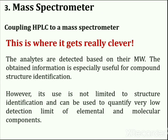The third detection method involves coupling the HPLC system to a mass spectrometer. When the detector is showing a peak, some of what is passing through can be diverted to a mass spectrometer, where it will give a fragmentation pattern that can be compared against a computer database of known patterns. This means the identity of a huge range of compounds can be found without having to know their retention times. Analytes are detected based on their molecular weight, and the information obtained is especially useful for compound structure identification.